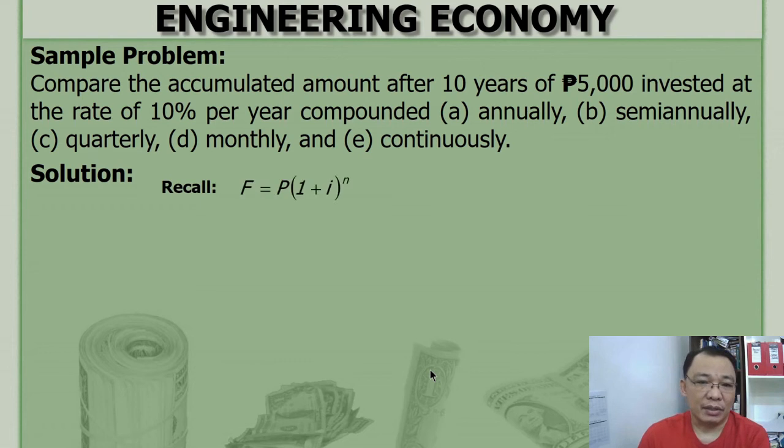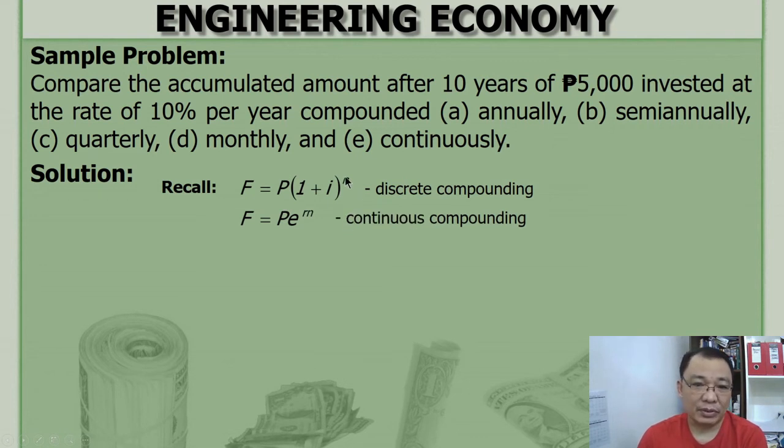Let's recall, this is the formula for discrete compounding or compound interest. And then this is also the formula for continuous compounding, and we are going to use this formula.